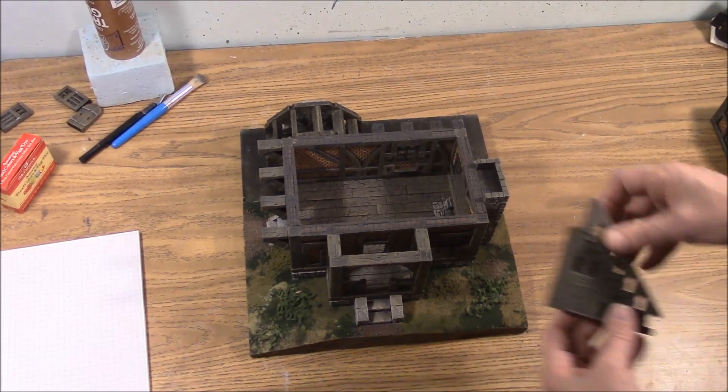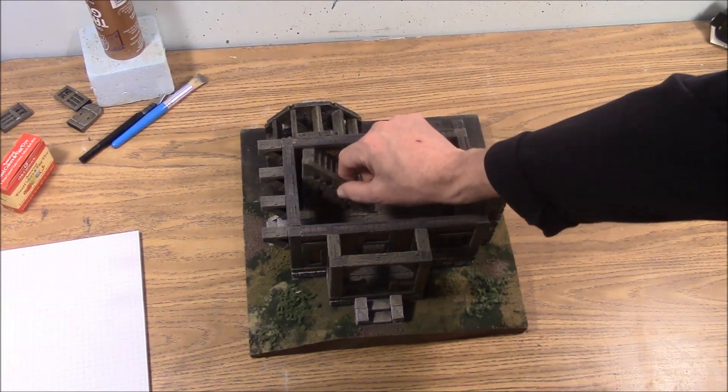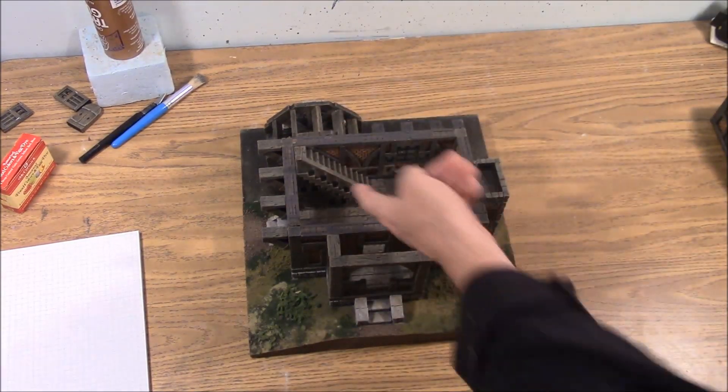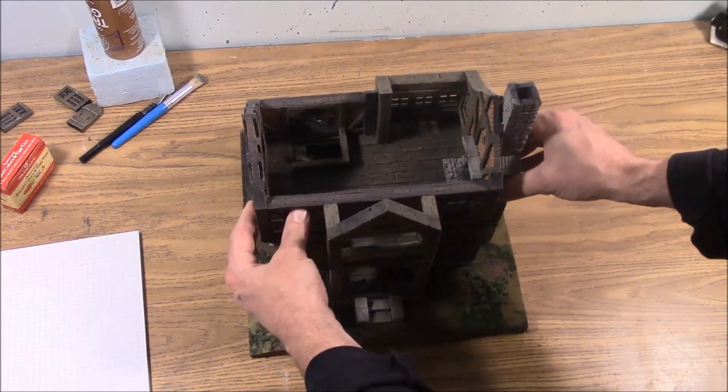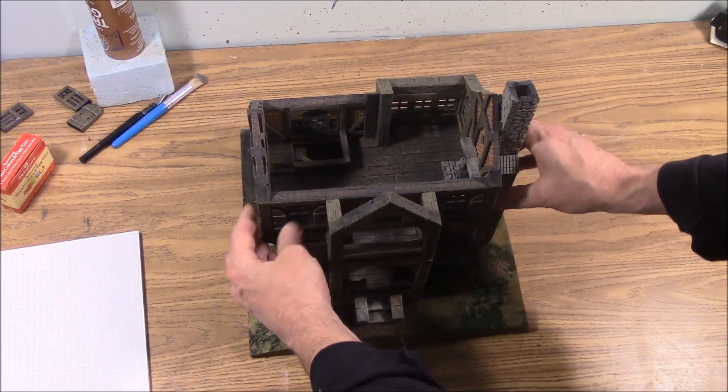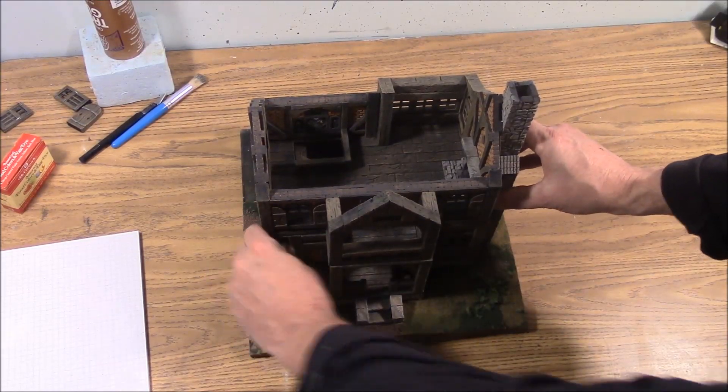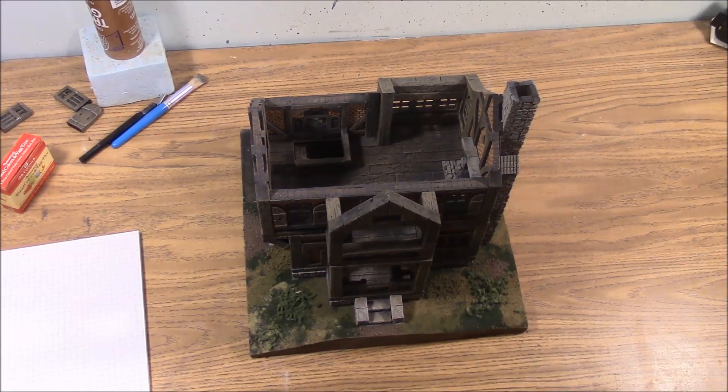Then we have a stairway that will go in here, and it kind of tucks up. It just sort of tucks into the corner like that, and it'll set there. Then we have the next floor that goes on top of it, and the stairway will fit through the hole that we have there. So it will set together pretty much like that.